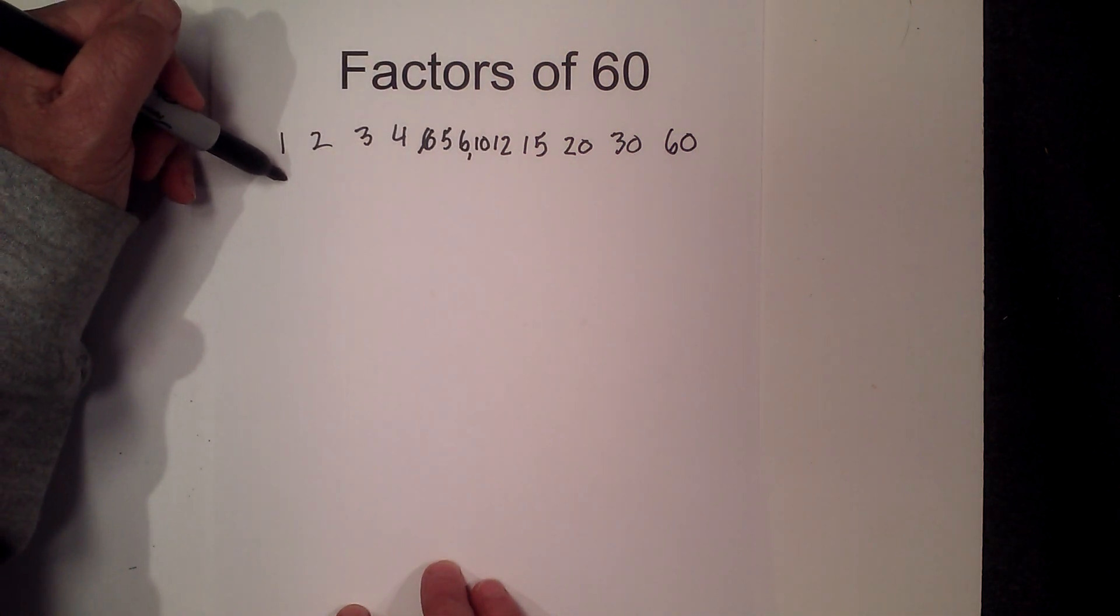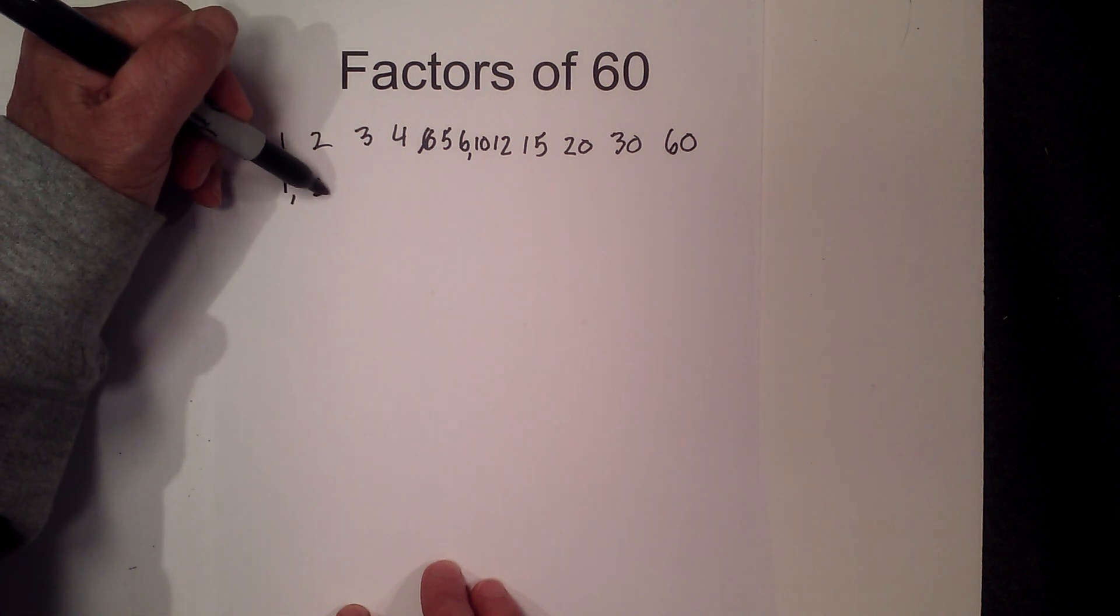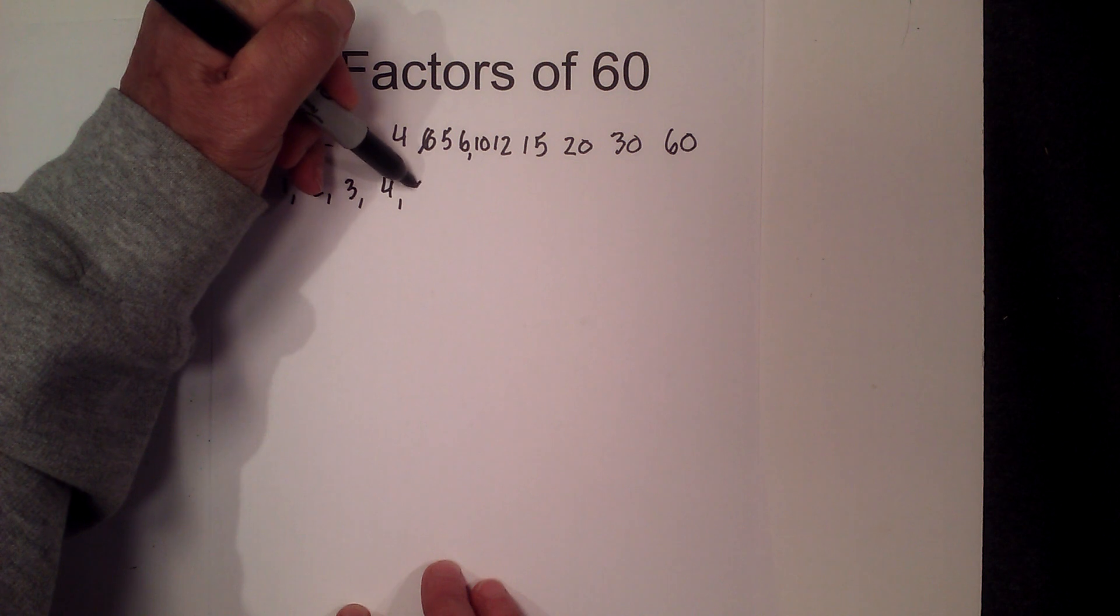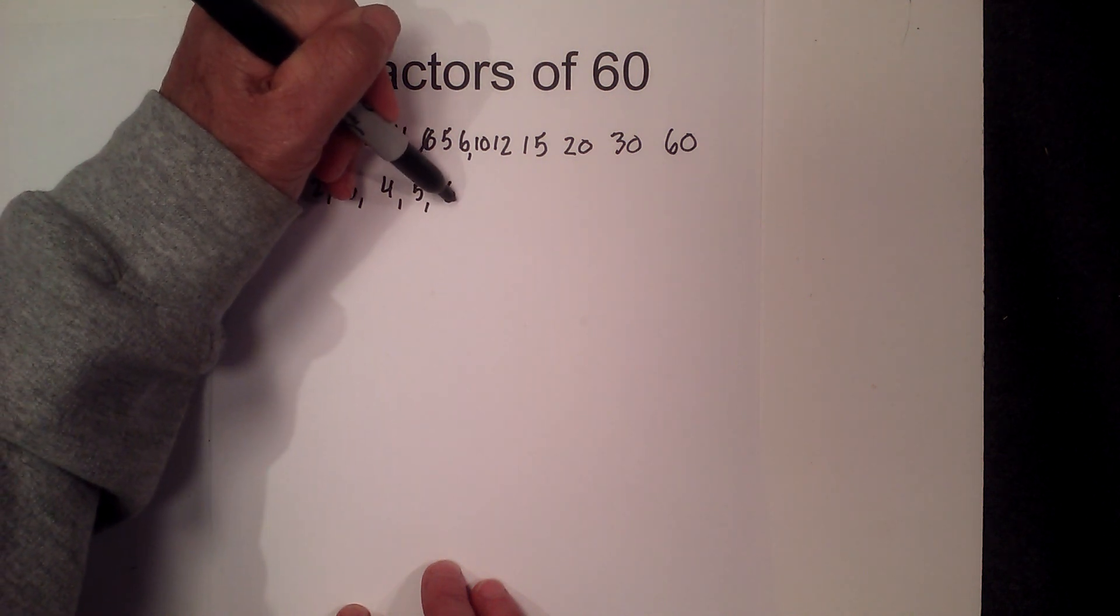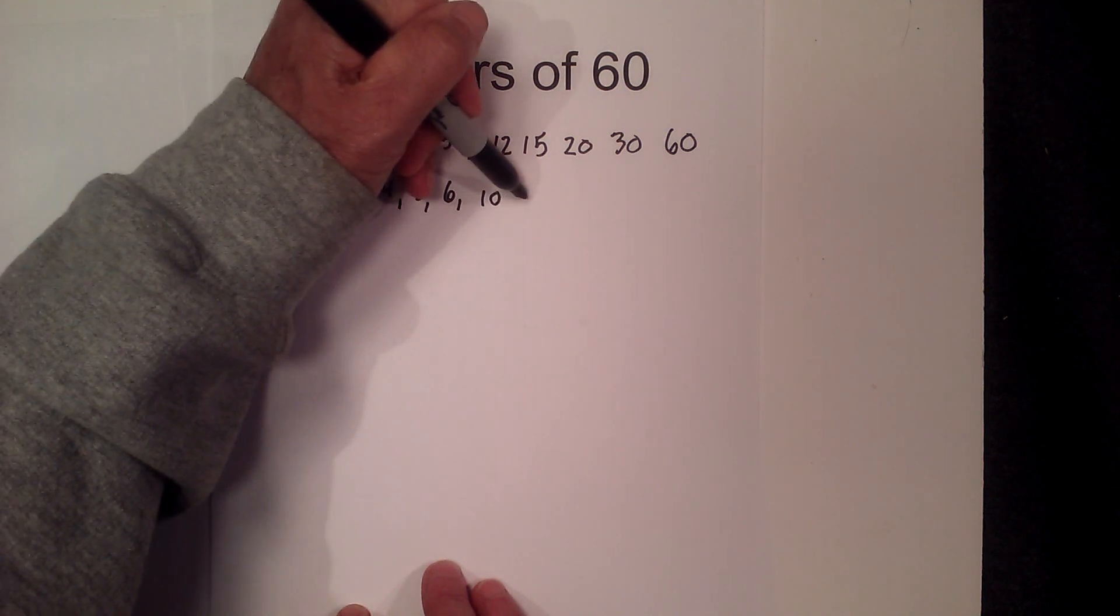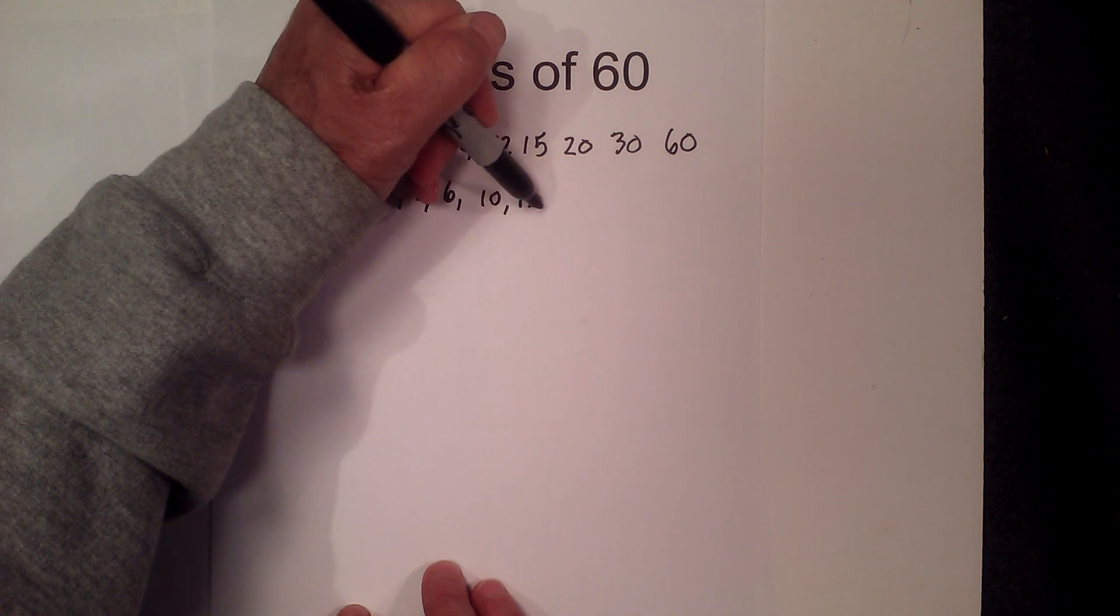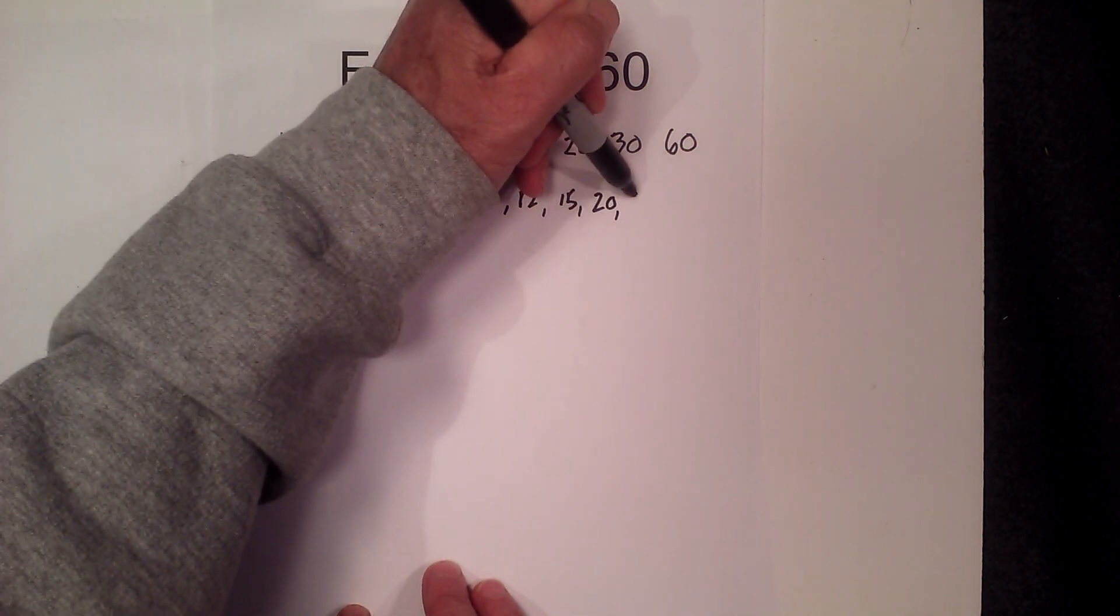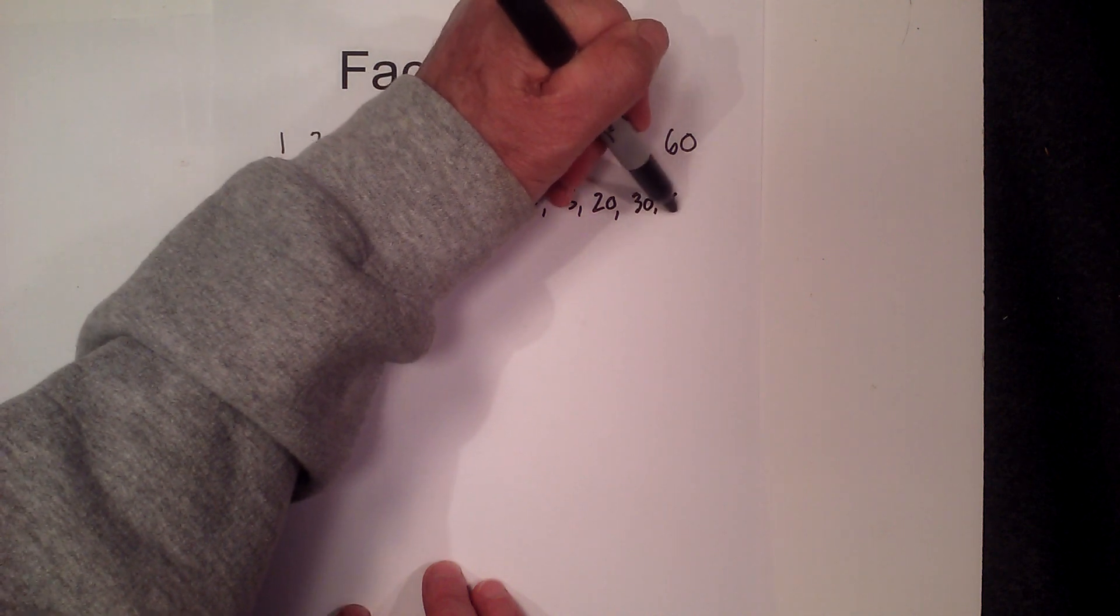So I'll rewrite the factors. They are 1, 2, 3, 4, 5, 6, 10, 12, 15, 20, 30, and 60.